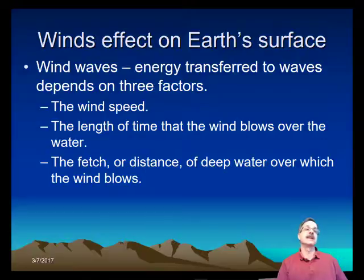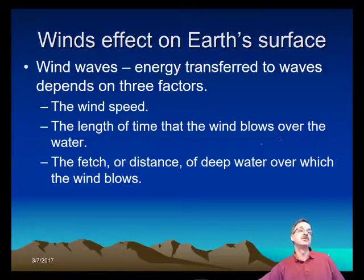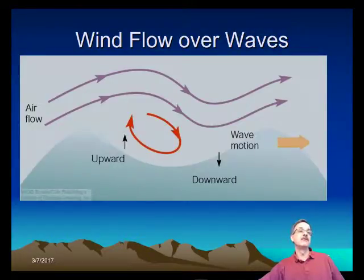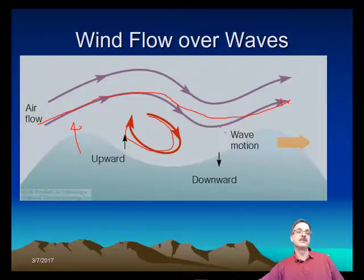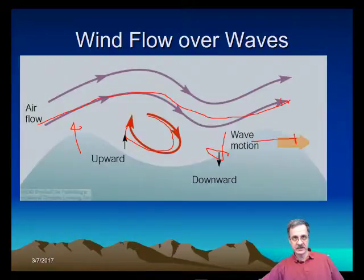The energy transfer from wind to waves depends on three factors: the wind speed, the length of time the wind blows over the water, and the fetch — or distance and depth of water over which the wind blows. The air flows over the water wave, an eddy forms, and it forces part of the water up and part of the water down, creating wave motion that moves across the water.